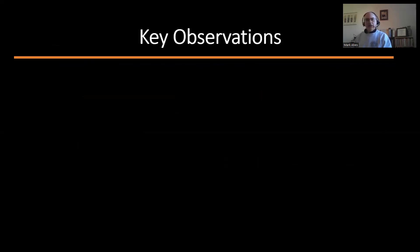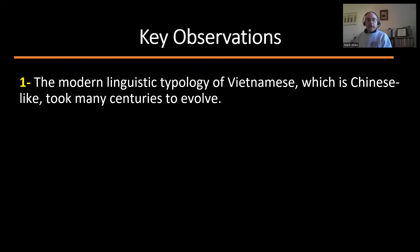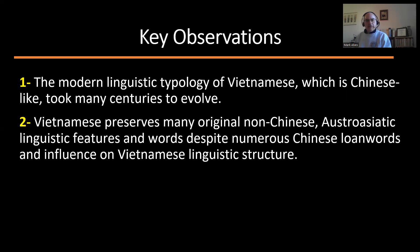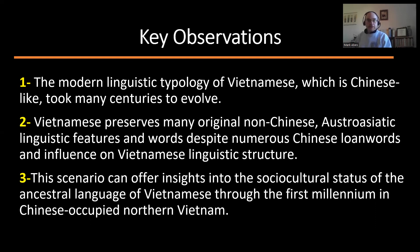Let me start with my key observations. First, the modern linguistic typology of Vietnamese — its structure as well as vocabulary, which is Chinese-like — took many centuries to evolve. It did not happen suddenly; it was a long process. Second, Vietnamese preserves many original non-Chinese Austro-Asiatic linguistic features and words, despite numerous Chinese loan words and influence on Vietnamese linguistic structure. The native elements are still in Vietnamese, and they tell us about ethnic history.